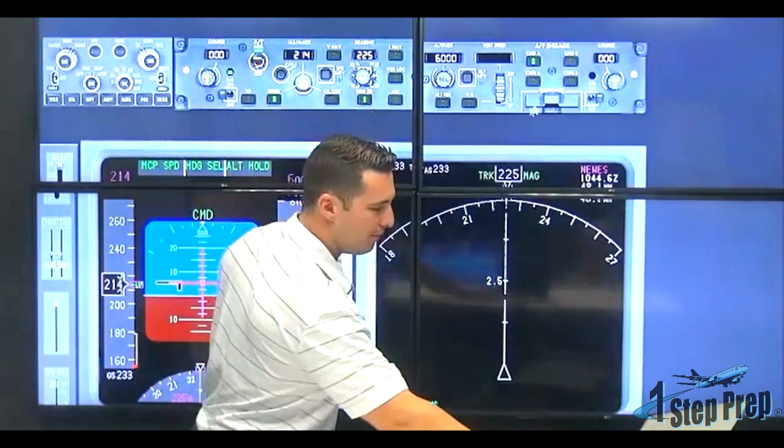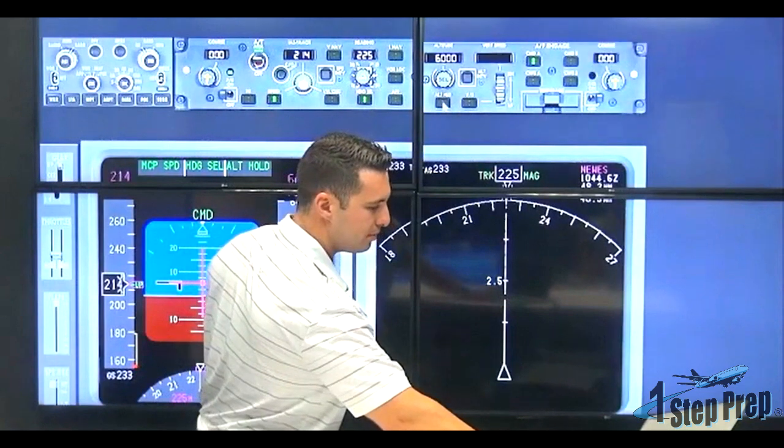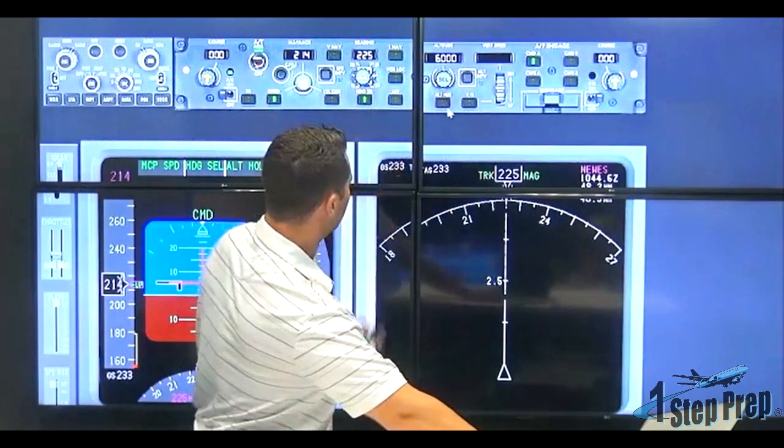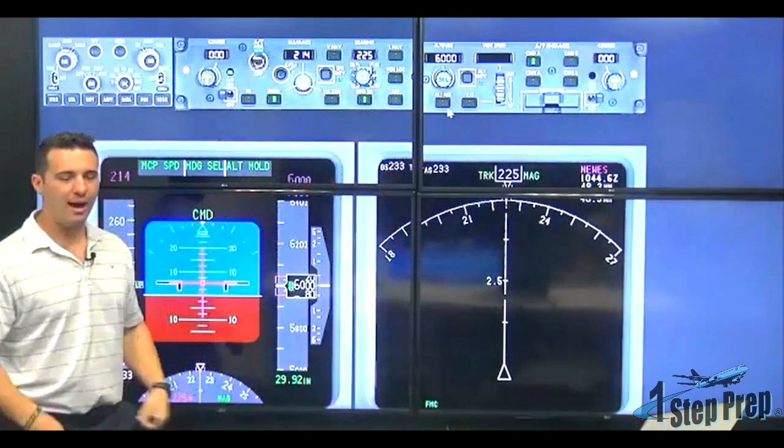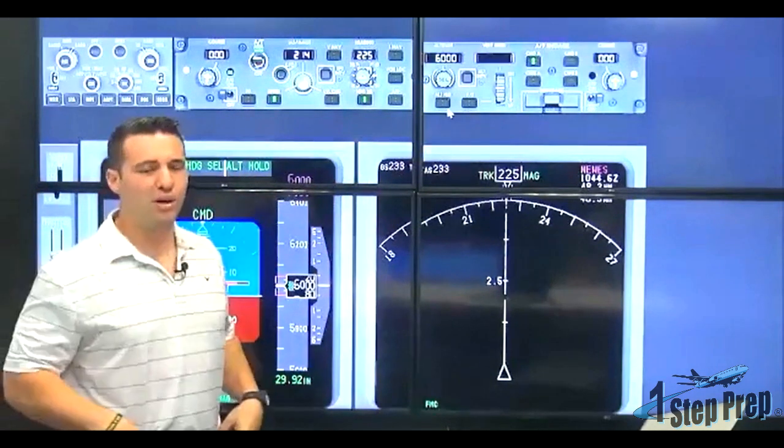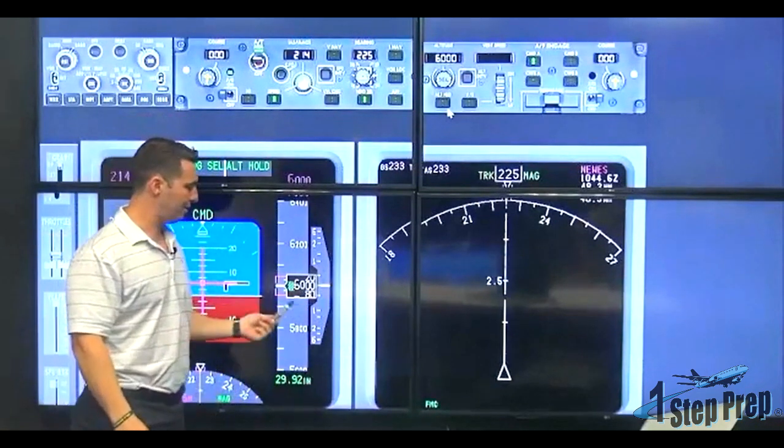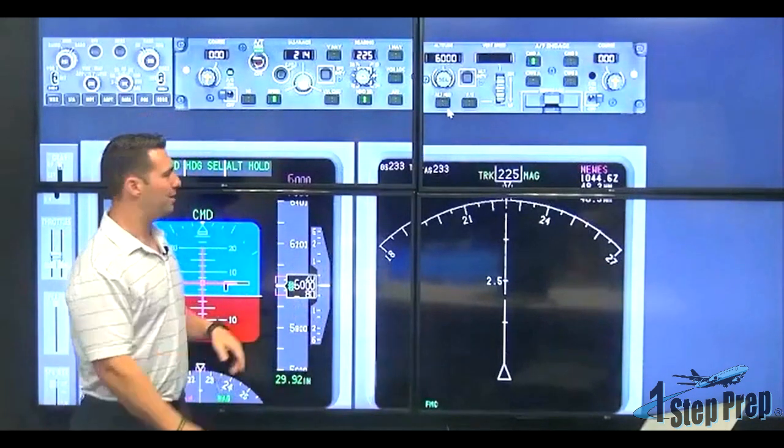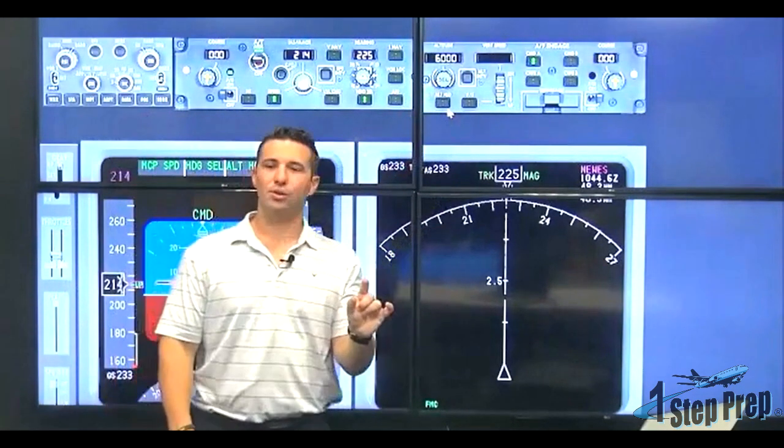And I can show you if I click altitude hold. Despite how many times I click it, the mode will never come off. Now, the reason we cannot deselect it is because the altitude that we're currently at, 6,000 feet, and the altitude in the MCP match. They're the same.